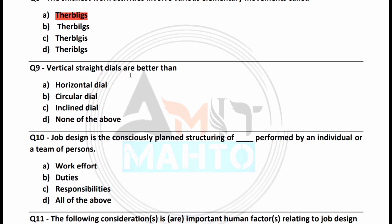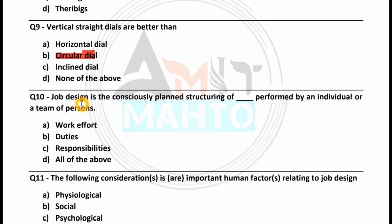Vertical state dials are better than: horizontal dial, circular dial, inclined dial, or none of these. The right answer is option B, circular dial. Job design is the consequential structured planning of work performed by an individual or a team — options were: work effort, duty, responsibility, or all of the above. The right answer is option A, work effort.